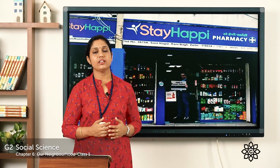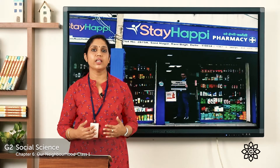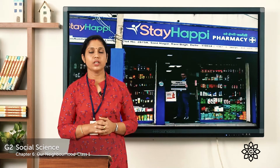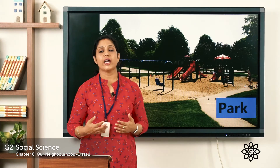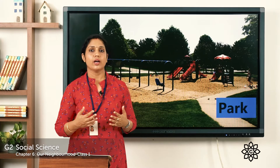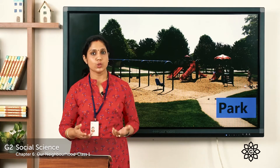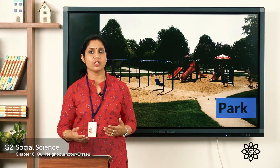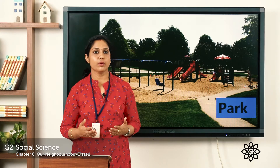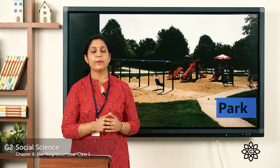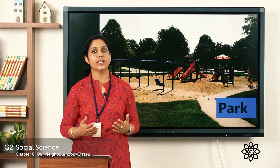These are the different types of people that we find in a market. In our neighbourhood we also find a park. A park is used for playing — it has slides, swings, see-saws, etc. Mostly in cities or towns, neighbourhoods have parks. Parents and grandparents also go for a walk in the parks.